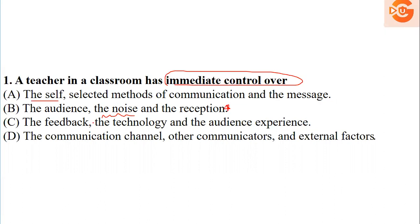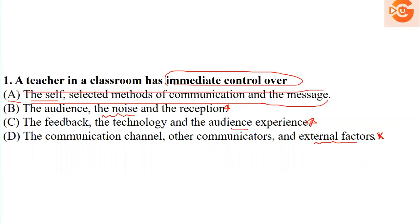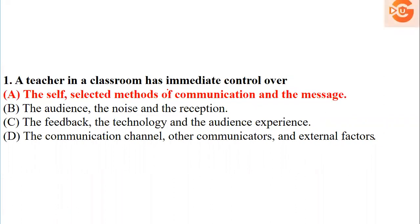So that second option is doubtful. The third option includes feedback, technology, and audience experiences — that is not completely under control. The fourth option has communication channel, other communicators, and external factors. External factors are uncontrollable; internal factors are controllable. So option A — the self, selected methods of communication, and the message — is your right answer.